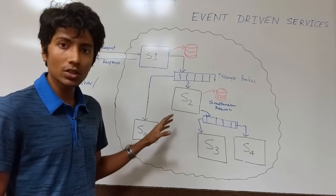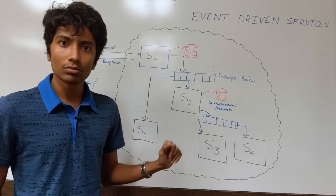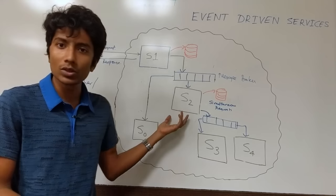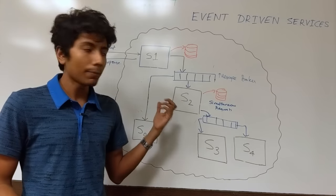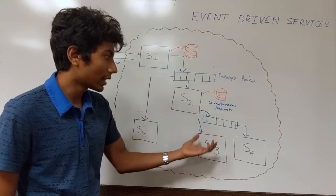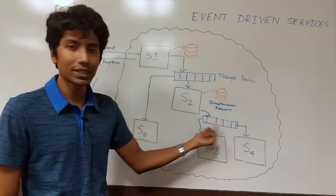Till both the messages are sent to S0 and S2, this message broker is going to be persisting those messages. Let's say S2 is down, and once it comes back up that time the message broker is going to replay those messages to S2 so that it can then send it to S3 and S4 using this message broker.